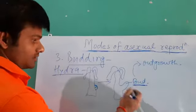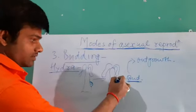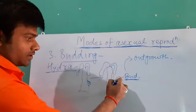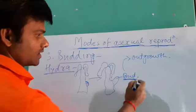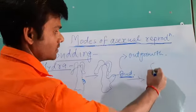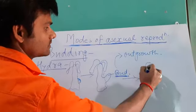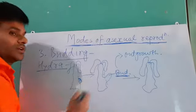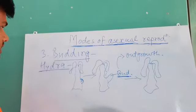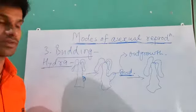After that, this bud is detached. It develops into a new individual. In such a manner, the budding process occurs.